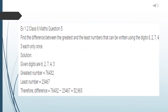Question five: find the difference between the greatest and the least number that can be written using the digits 6, 2, 7, 4, 3 — each only once. Given digits: 6, 2, 7, 4, 3. Greatest number (descending): 76432. Least number (ascending): 23467. The difference is 76432 − 23467 = 52,965.